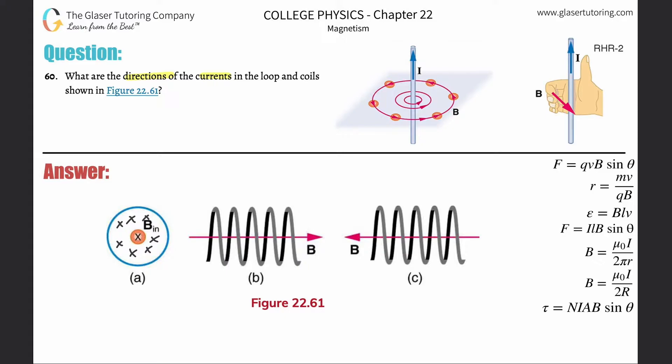The only way for that to happen using right-hand rule number two is if the current moves in a clockwise fashion. Pretend the current here is moving downward. If the current's moving down, you're pointing your thumb down. Then your fingers are rotating around the loop like this, and as your fingers rotate around the loop, on the inside of the loop they would be pointing into the page.